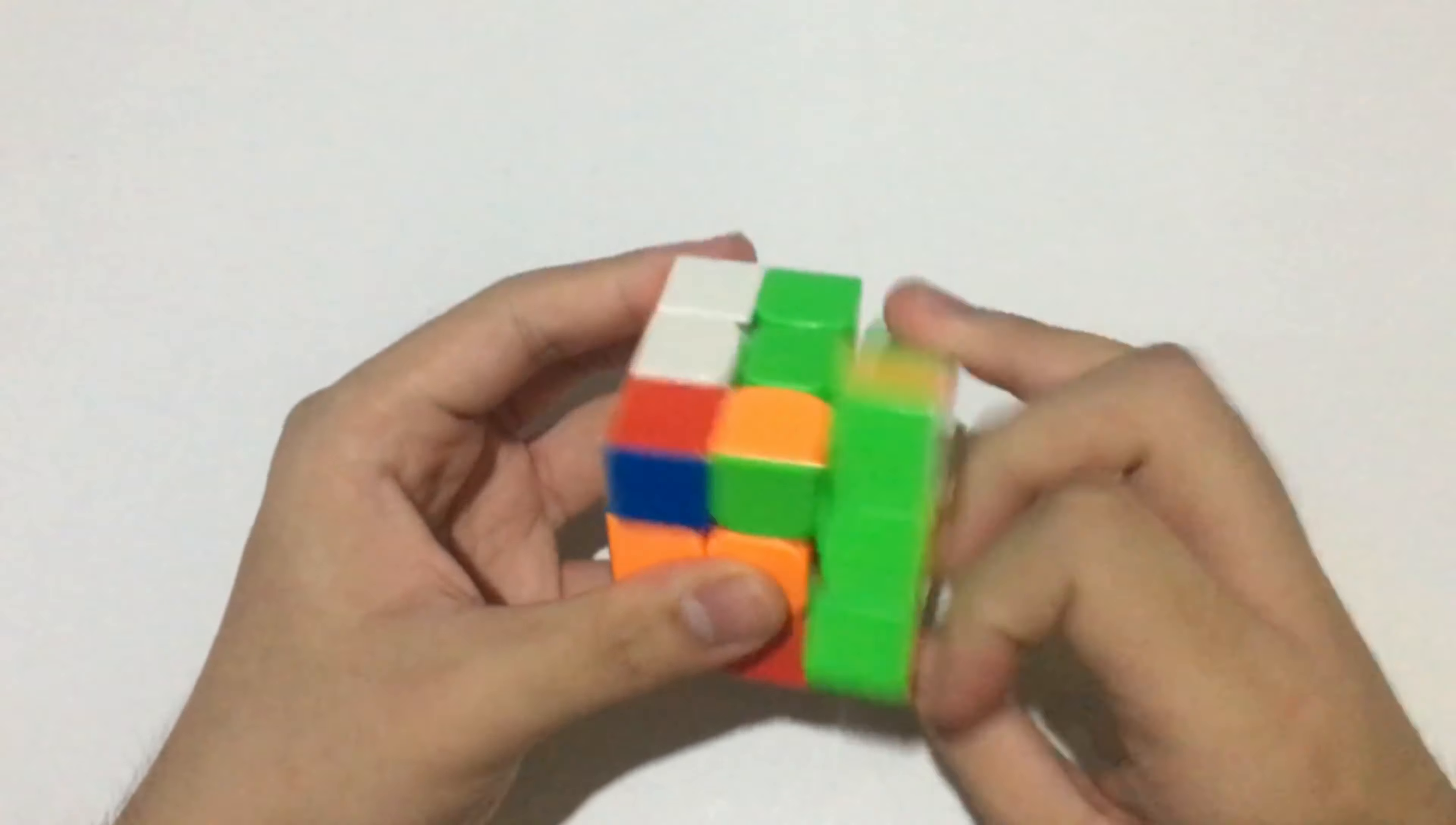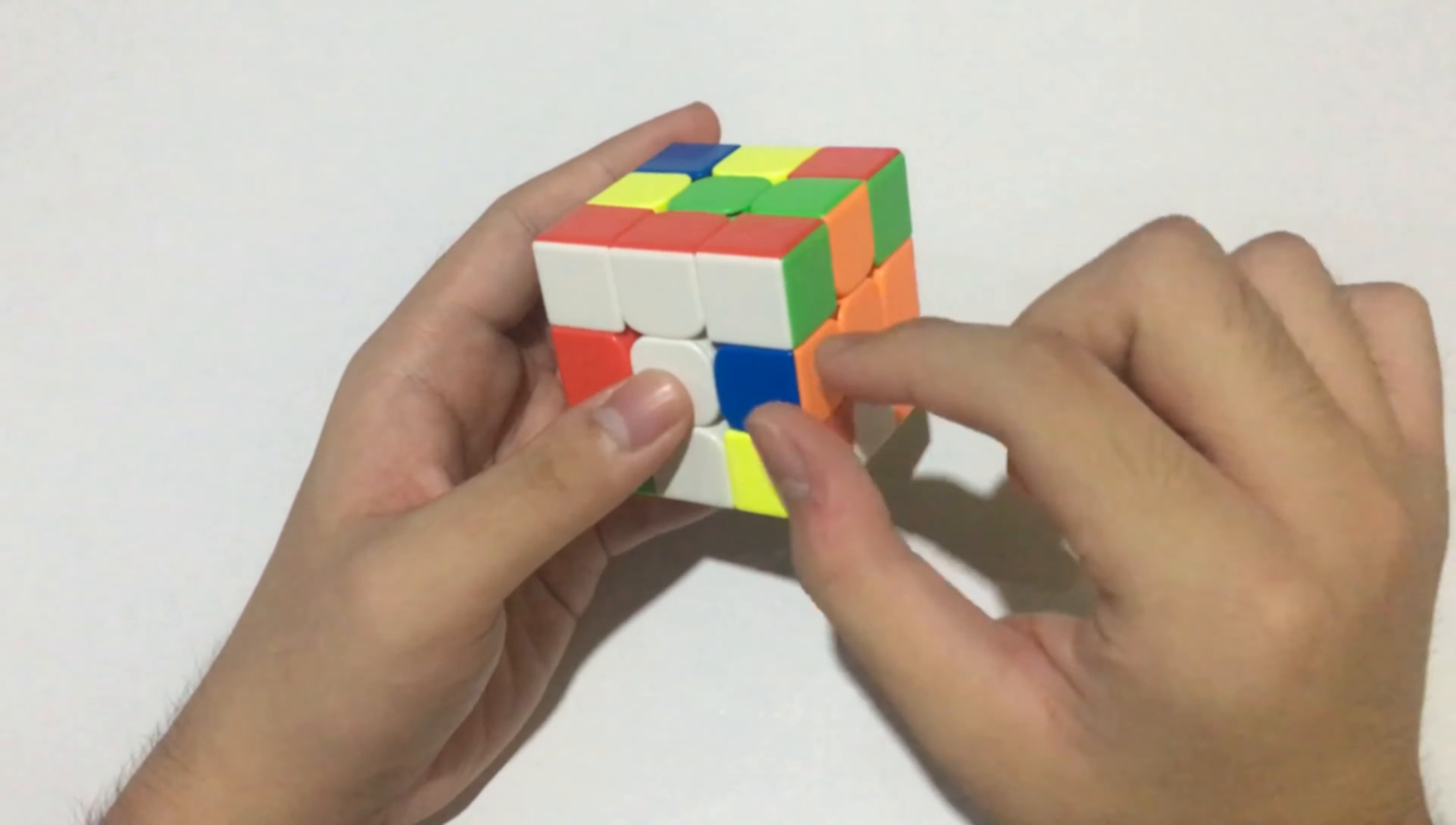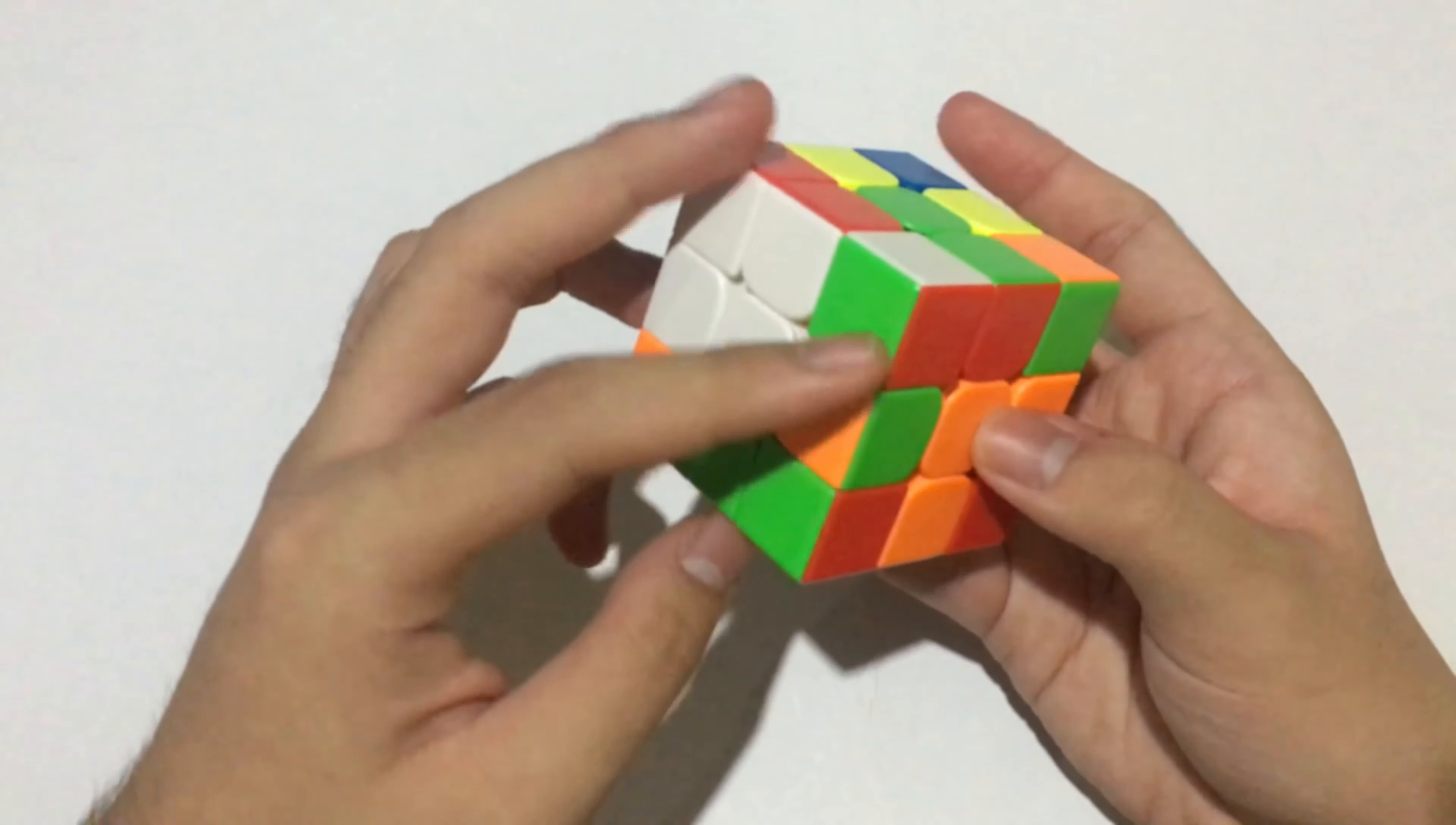Obviously, the better solution for this scramble is to solve this edge first, align the cross, and solve this pair on the back.